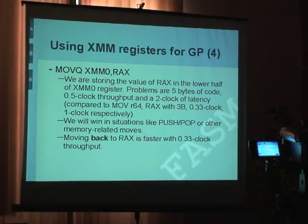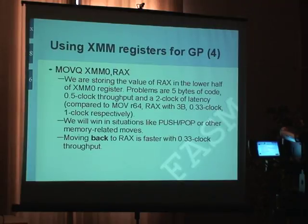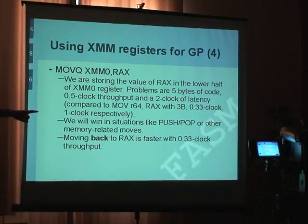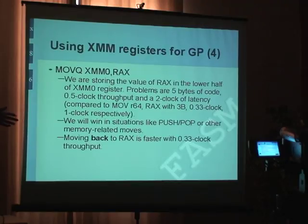What we're doing is using SSE in a way it wasn't meant to be used, but through this we can use it more effectively. Here is one example: MOVQ XMM0, RAX — it only fills the lower part of the register. But you can always shift it to the higher part and move another value to its lower part, so you can effectively double the amount of data you can save in multimedia registers. Of course there are some problems — the instruction length is 5 bytes with half a clock throughput and 2 clock latency. When you compare it to a regular MOVE from RAX to any other 64-bit register, it's only 3 bytes and a third of a clock.